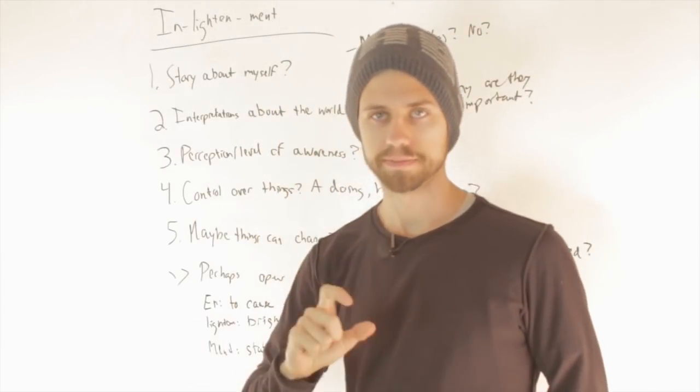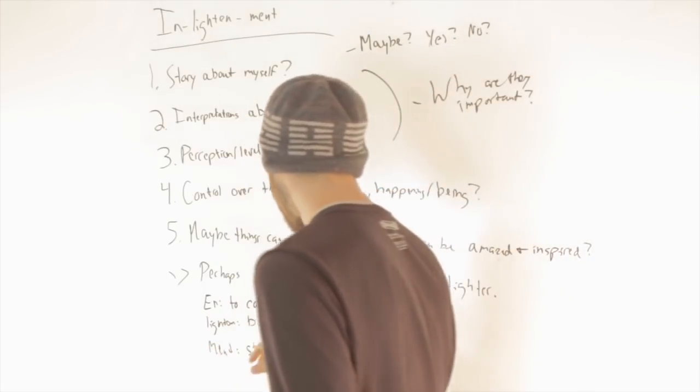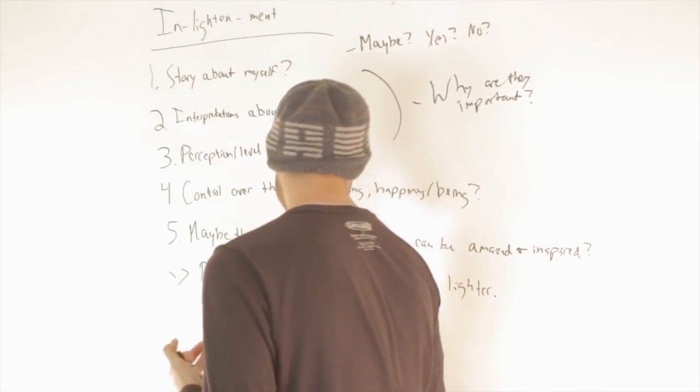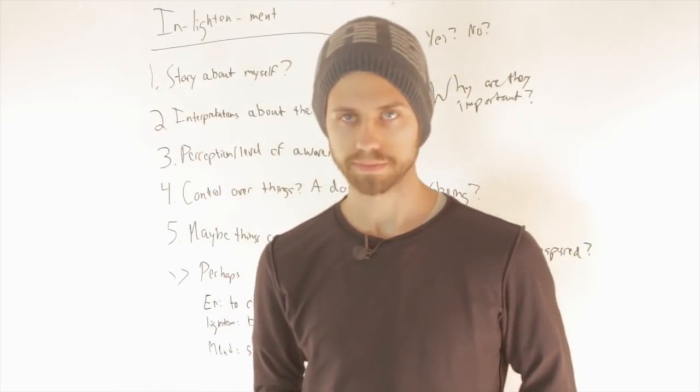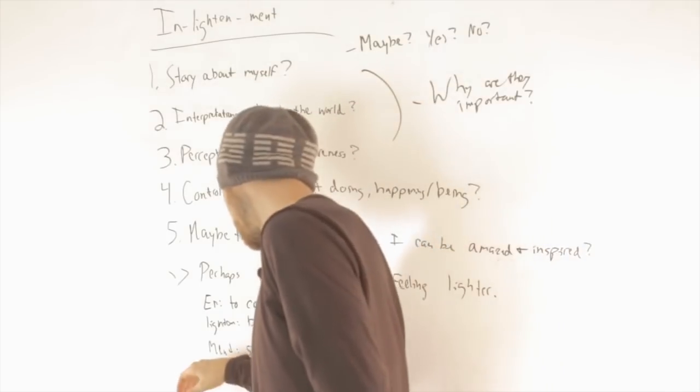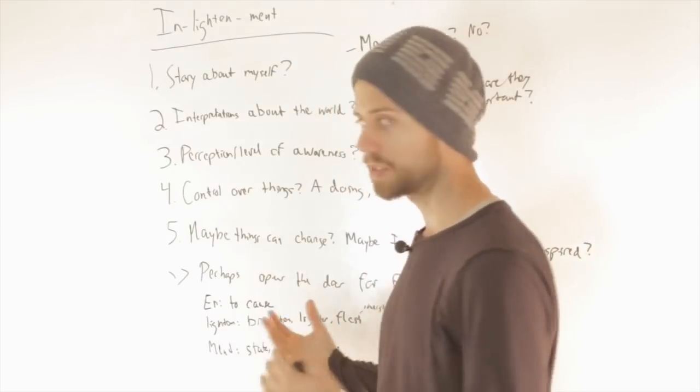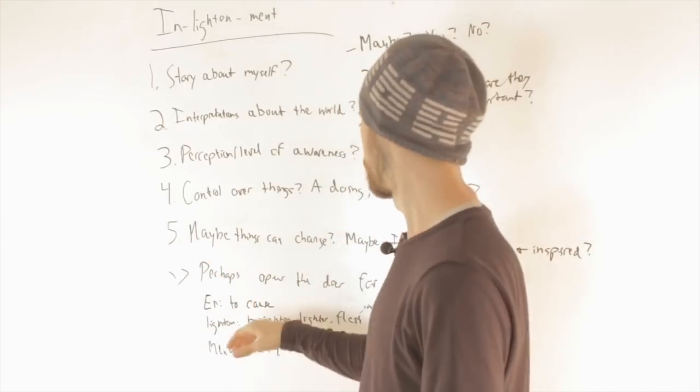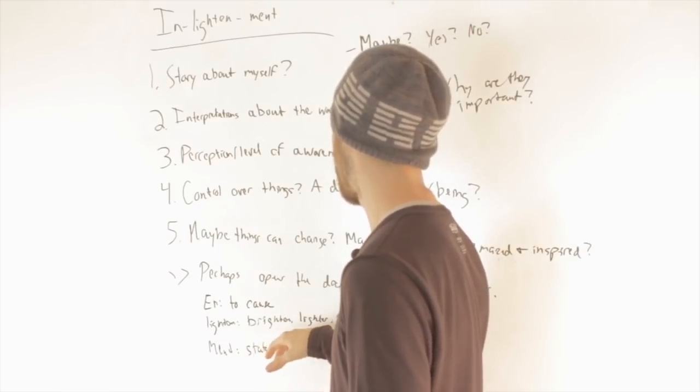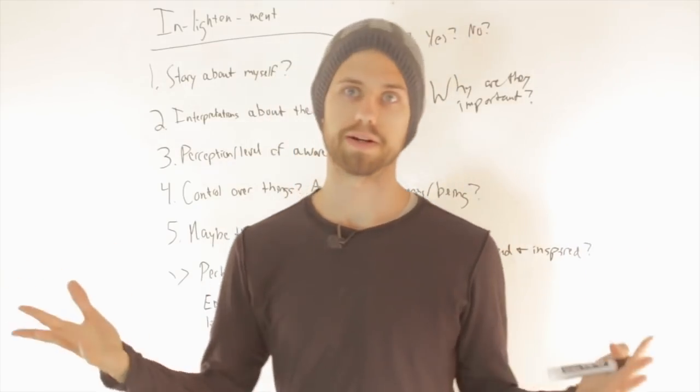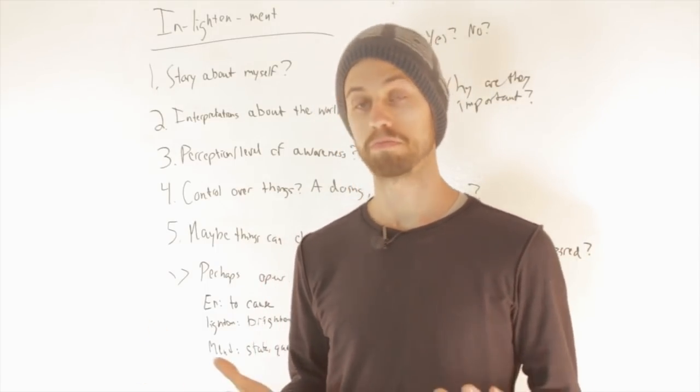So the prefix 'en' means to cause. Enlighten obviously means brighten or lighten or lighter, make something lighter, or basically kind of like a flash. And 'ment' refers to state, quality, or process. So basically the word actually means to cause a state, quality, or process of being lighter or brighter. That's really all it means. So can that happen in a few minutes? Maybe.